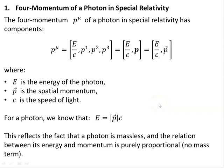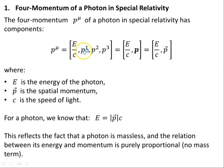So the four-momentum, p with contravariant index mu, of a photon in special relativity has the following components: in the time component, E on c, and then in the spatial components we have the three-momentum p1, p2, p3, or the spatial momentum.